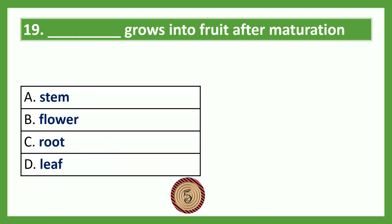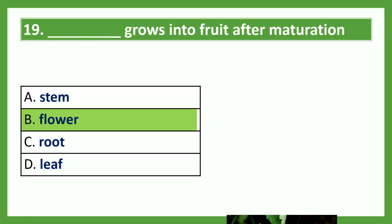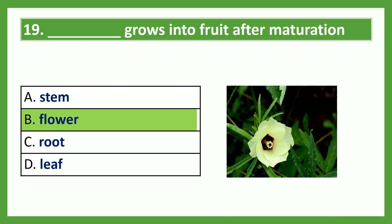Dash grows into fruit after maturation. Option A: stem; Option B: flower; Option C: root; Option D: leaf. The answer is Option B, flower. The flower grows into fruit after maturation.